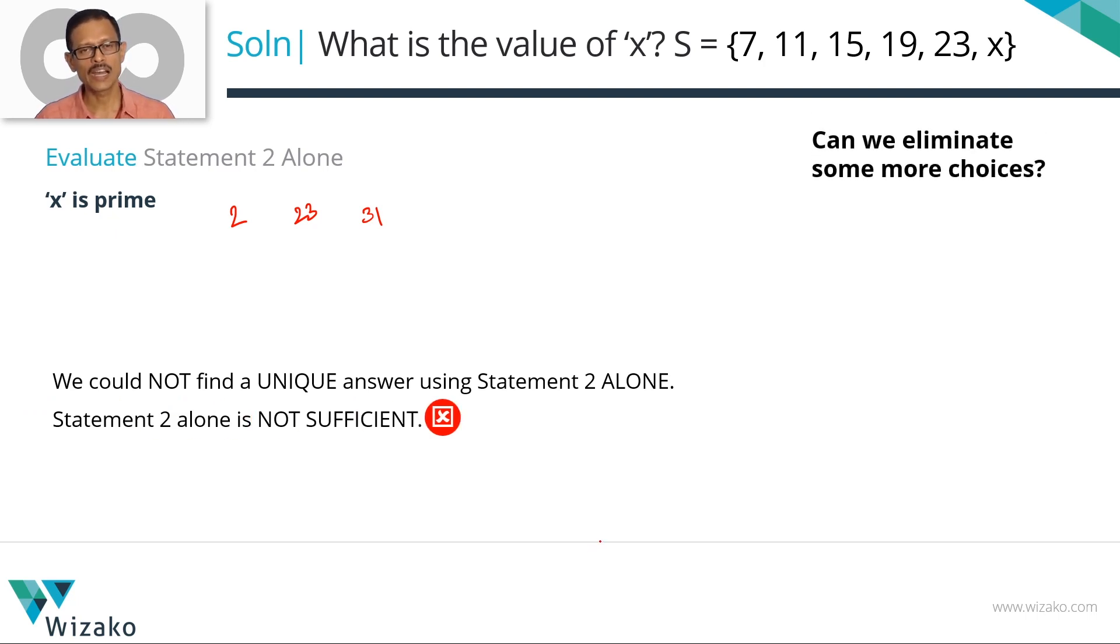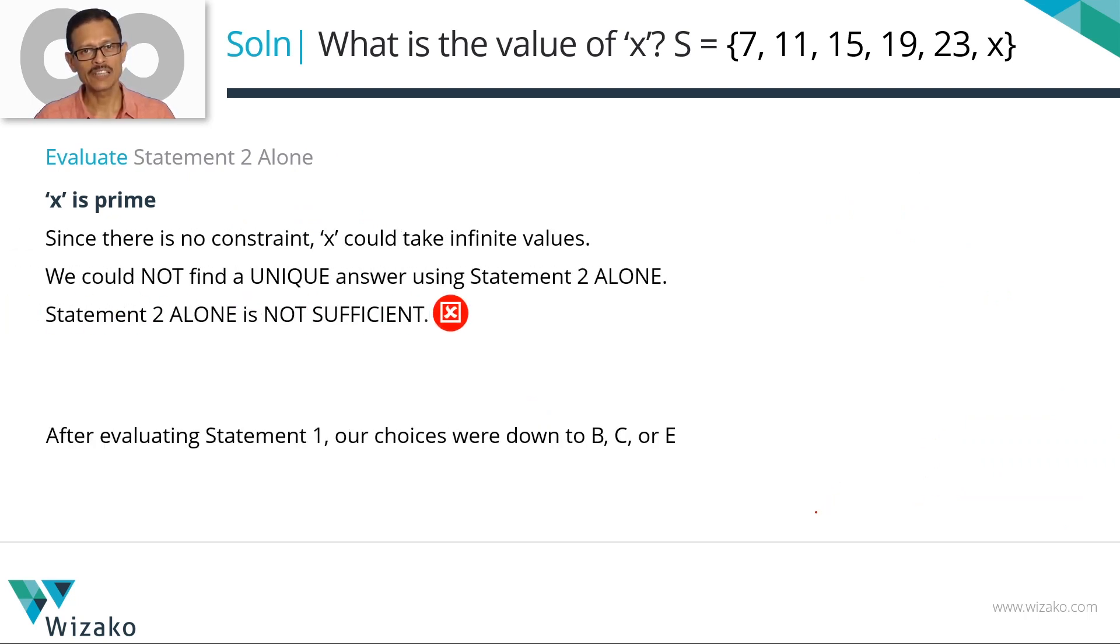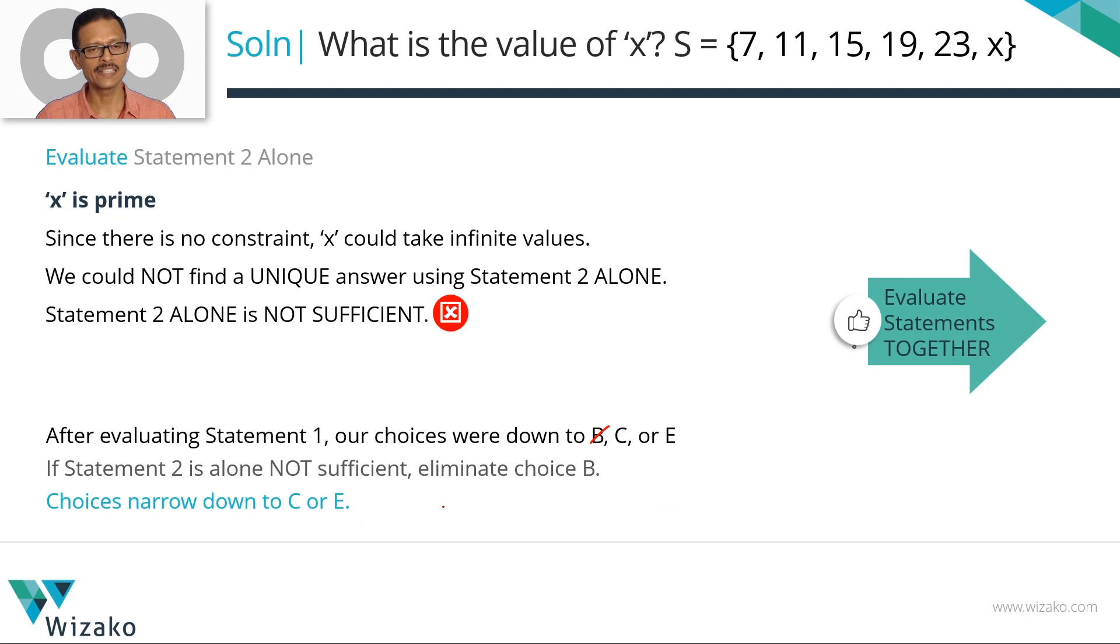What were we down to after evaluating statement 1? We realized 1 was not sufficient. We ruled out choices A and D. What were we down to? Choices B, C, or E. I'm writing it in this order. If 2 alone would have been sufficient, we would have gone with B. 2 is also not sufficient. Let's eliminate choice B. What are we down to? C or E. Summarize this bit too quickly before we move on to combining the two statements. x is prime. Infinite values are possible. 2 alone is not sufficient. What can we eliminate now? We can eliminate B from the shortlisted version of B, C, E. So what are we down to? Choices could be either C or E.